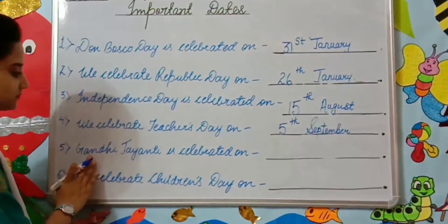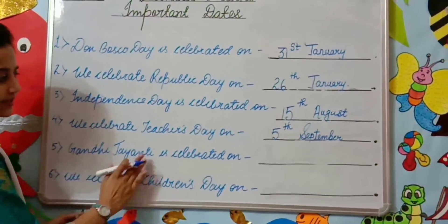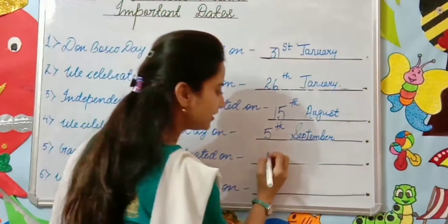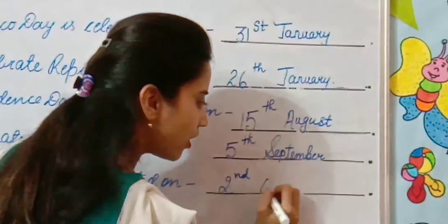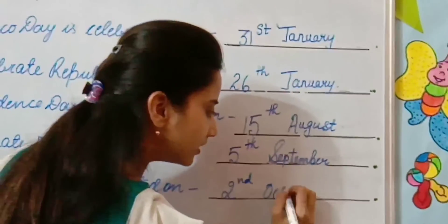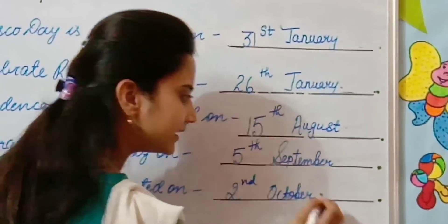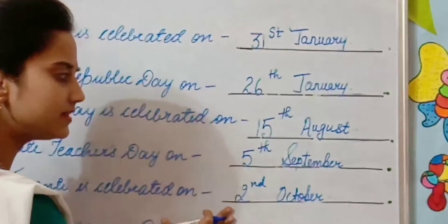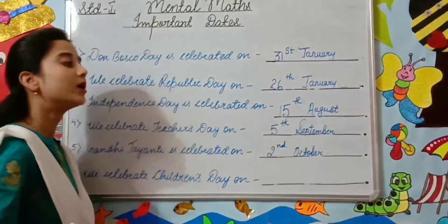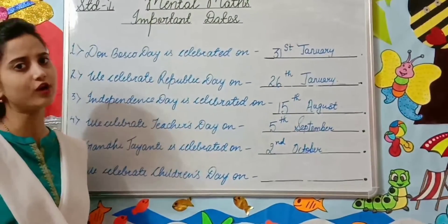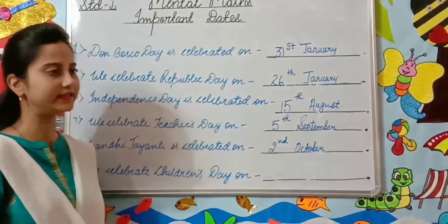Next, Gandhi Jayanti. Gandhi Jayanti is celebrated on 2nd of October. We celebrate the birthday of Mahatma Gandhi.